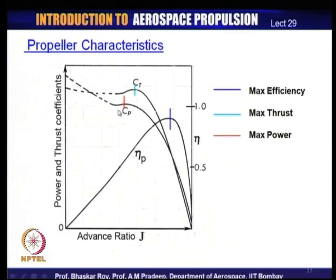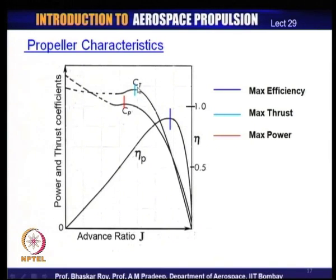On straight and level flight, the power characteristic and thrust coefficient characteristic are shown — the maximum of the two are different, and both are different from the maximum efficiency point. The maximum efficiency occurs at a higher advance ratio while maximum thrust occurs at a lower one. As a result, the aircraft designer or operator must decide where the propeller would be mostly operative.